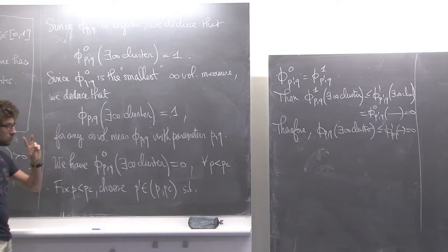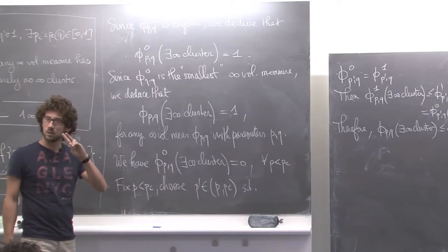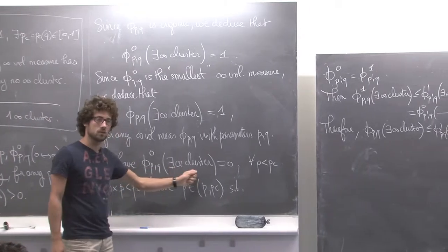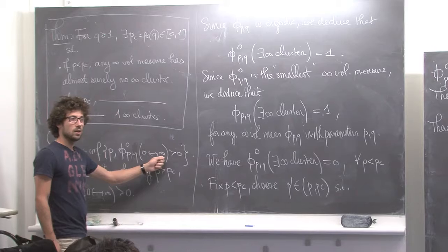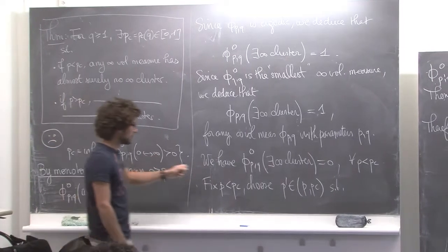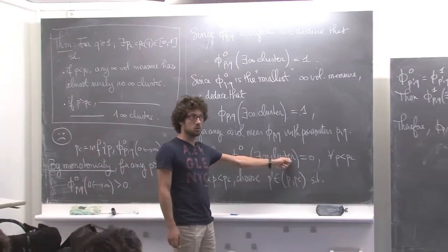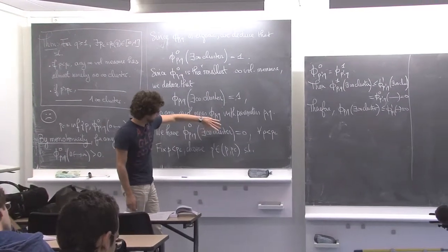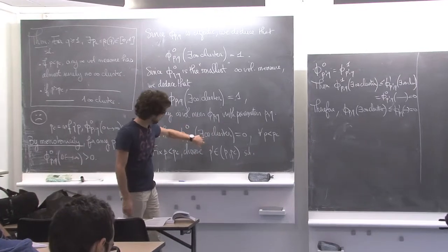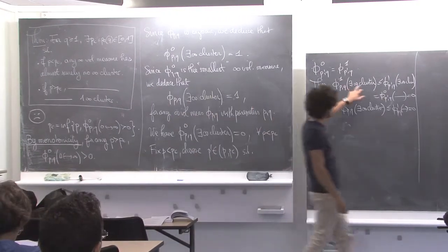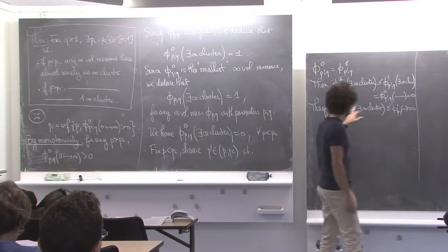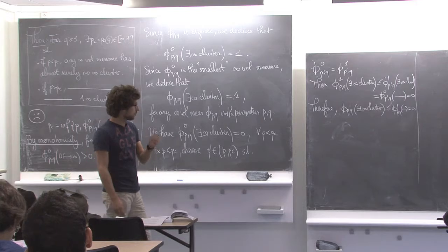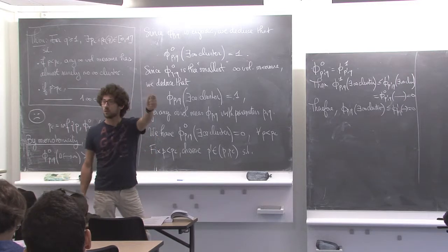Notice there are two tricks — two things that are not completely straightforward. Notice I work with 'there exists an infinite cluster' and not '0 connected to infinity.' I could put '0 connected to infinity' and do the same reasoning, because I'm just using the fact that it's an increasing event. I would get that for any random cluster model, for any infinite volume measure, the probability that 0 is connected to infinity is 0.